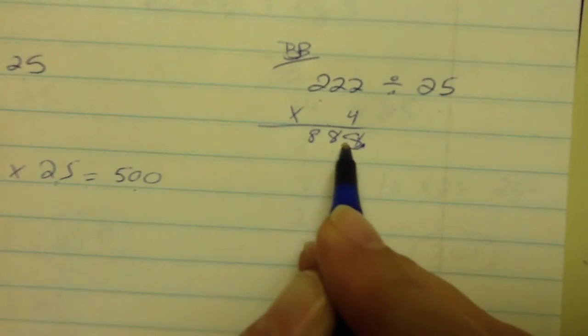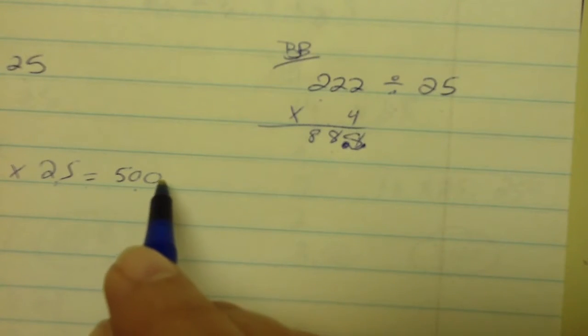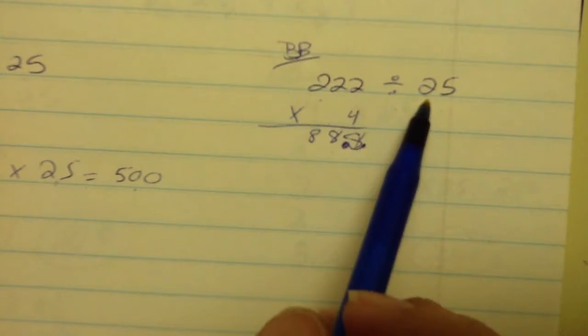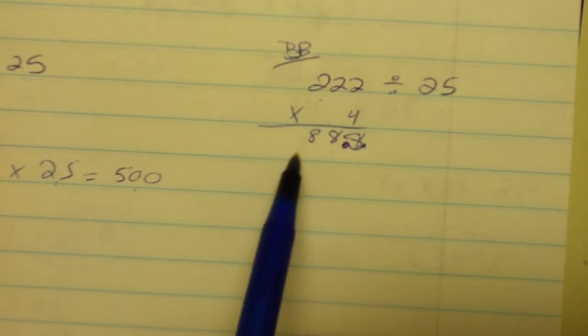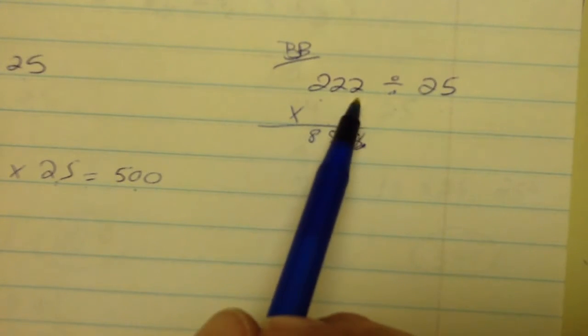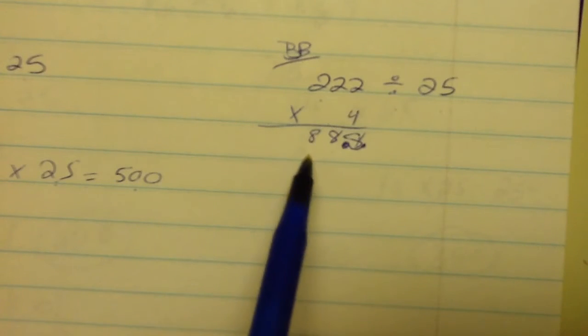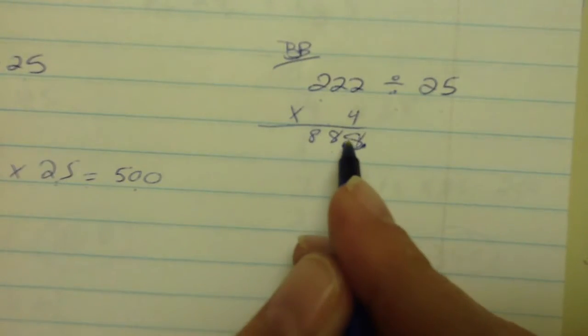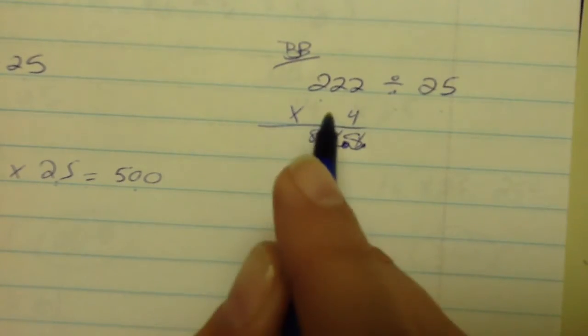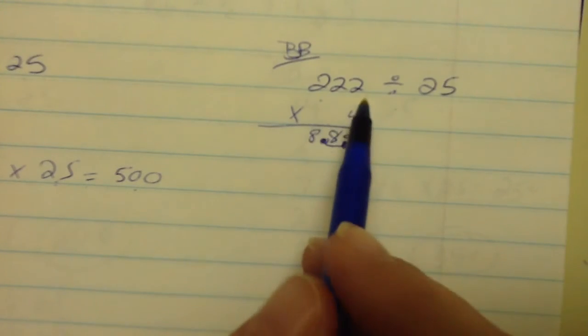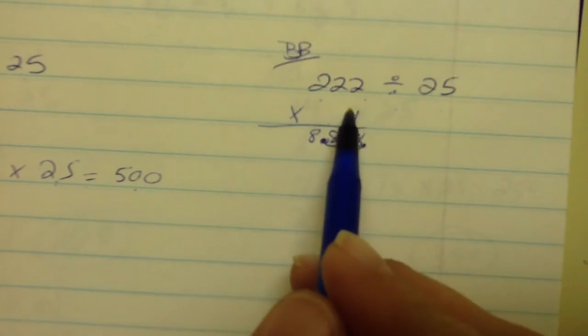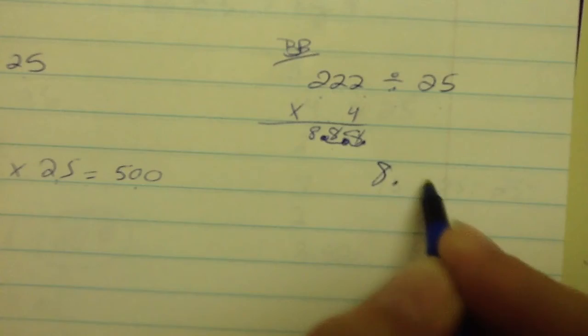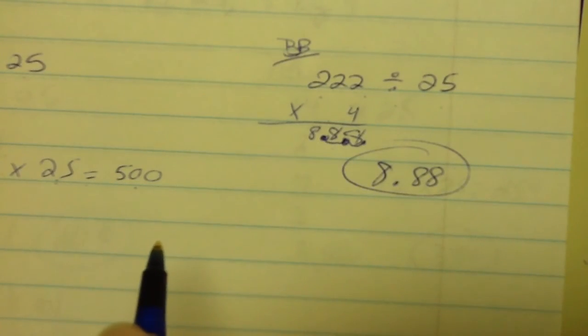So if we move the decimal here, 88.8, let's see if this answer would make sense. 222 cut in half is going to be about 100, right? 200 cut in half is 100, so 222 cut in half is a little more than 100. So 222 divided into 25 parts, that certainly could be a big number like 88. That's almost 100, that's almost half. So we move the decimal again, 8.88. So let's see, 222 divided into 25 parts makes sense that it's a little bit under 10, right? So your answer would be 8.88. That is correct, it's a little bit under 10.